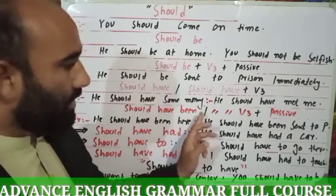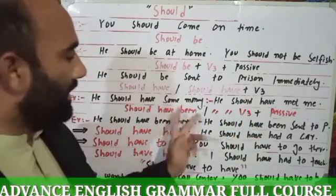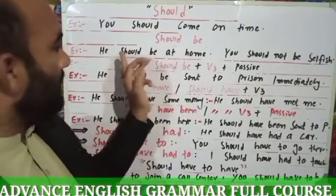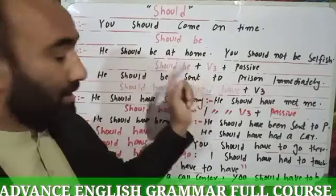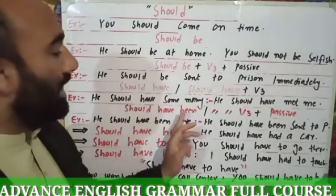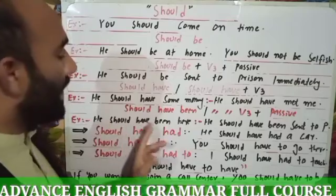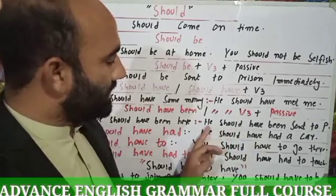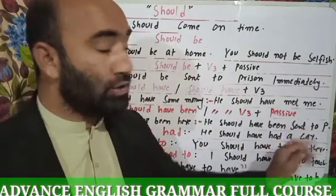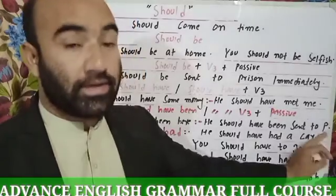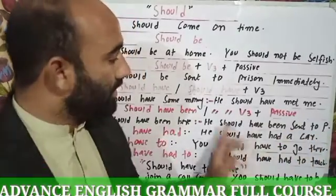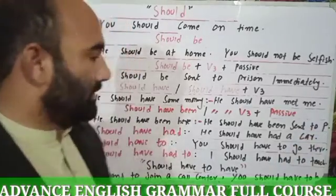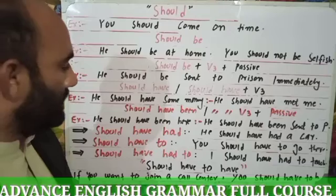SHOULD HAVE BEEN. SHOULD HAVE plus third form of the verb — again it has two uses. 'He should have been here.' For example, we say 'He should be at home' in the present, but in the past we use SHOULD HAVE BEEN — 'He should have been here.' This is also the passive sentence: 'He should have been sent to prison.' These two sentences are related to the past.